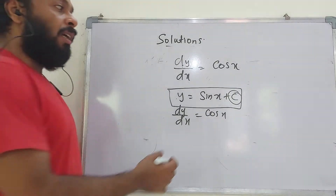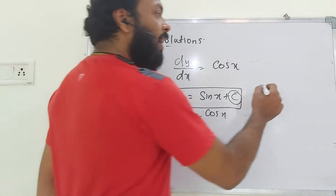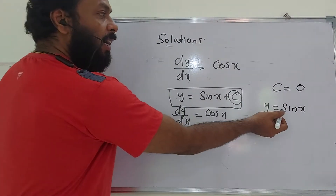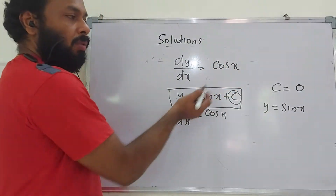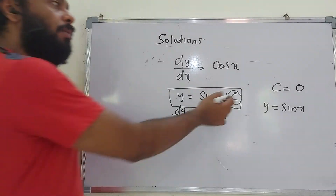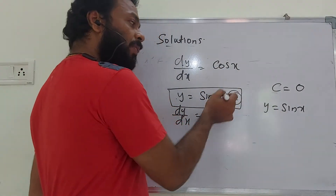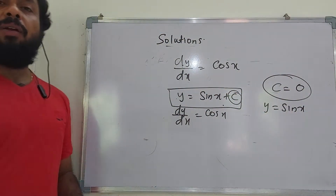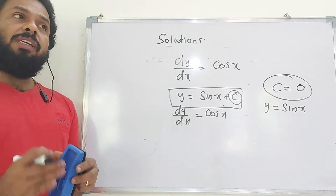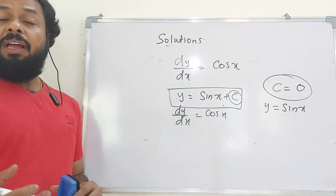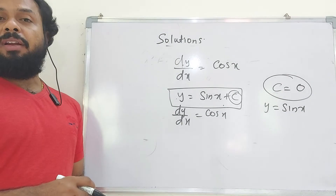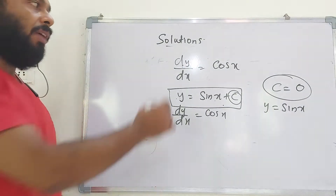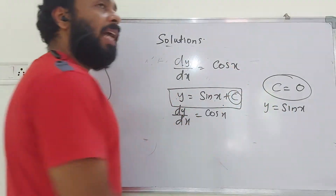In the general solution, c is arbitrary, so we can assign values to it. If c = 0, we get y = sin x, and dy/dx = cos x, which satisfies the equation. A solution obtained from the general solution by giving particular values to the arbitrary constants is called a particular solution. Here y = sin x + c is the general solution and y = sin x is a particular solution.